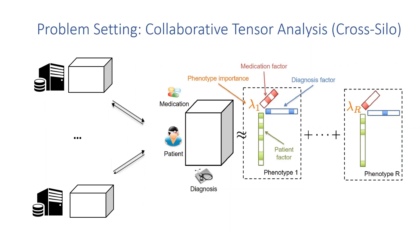Here we use electronic health records or EHR data as an example. As we can see in the middle, the data is represented as a three-mode tensor with a patient mode and two feature modes, diagnosis and medication.